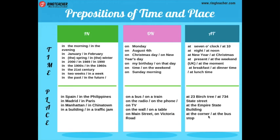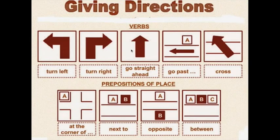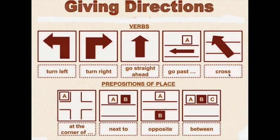Ya vamos a trabajar más preposiciones para conocer cómo vamos a dar una dirección o una indicación. Giving directions. Para dar instrucciones es necesario que tengan en cuenta que también se pueden usar verbos. Por ejemplo, como lo describen en la imagen: turn left — girar a la izquierda; turn right — girar a la derecha; go straight ahead — seguir derecho; go past — que pases por; cross — por ejemplo, cross the avenue — cruzar la avenida.